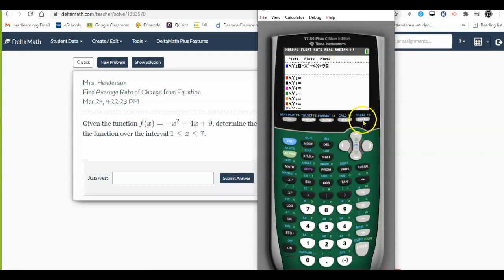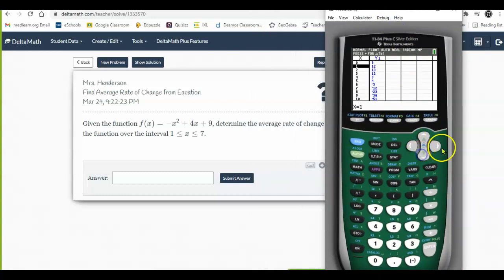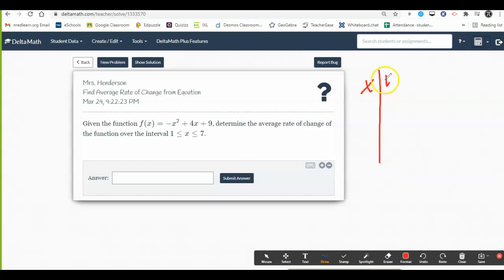For 1, 1 is with 12, and 7 is with negative 12. So in my table, 1 was with 12, and 7 was with negative 12.